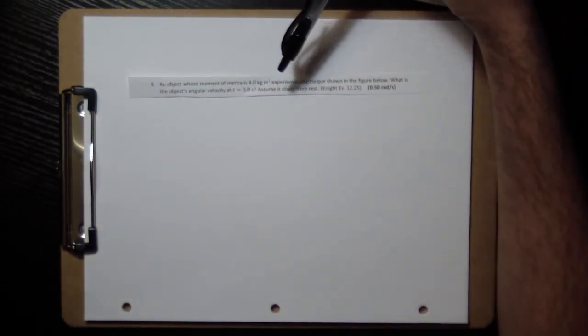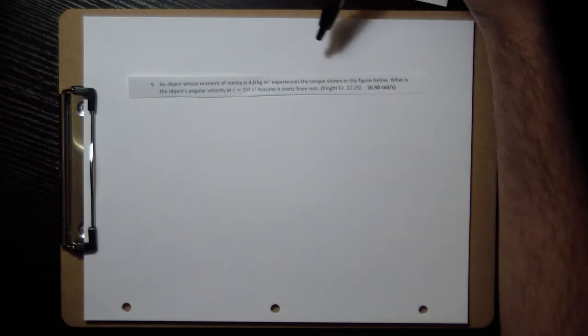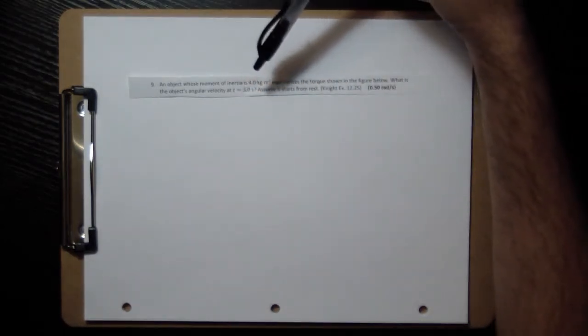Let's look at number 9. An object whose moment of inertia is 4 kilogram meters squared experiences the torque shown in the figure below. What is the object's angular velocity at t equal to 3 seconds, assume it starts from rest?